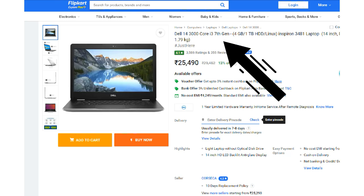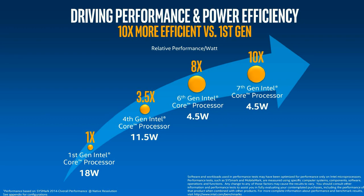There are also generations in processors. We have 6th generation, 7th generation, 8th generation, and now we are in the 10th generation. The later the generation, the more improved the technology. As generation increases, the architecture improves, giving us a more power-efficient laptop with lower battery consumption and lower heat.